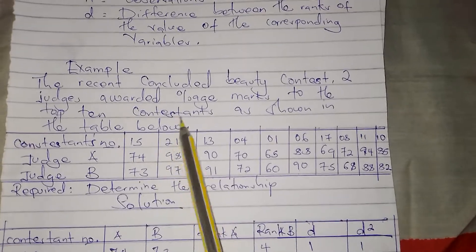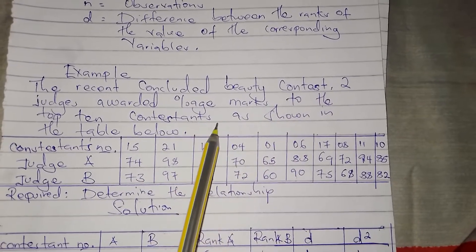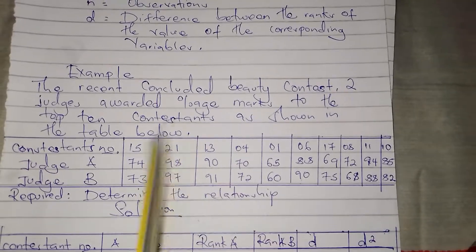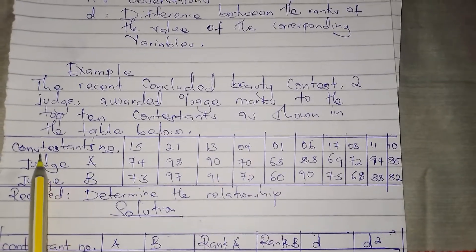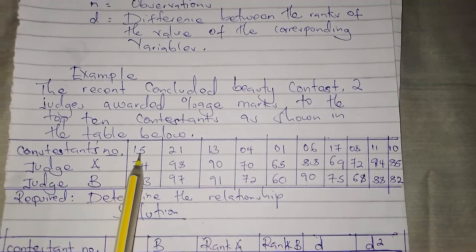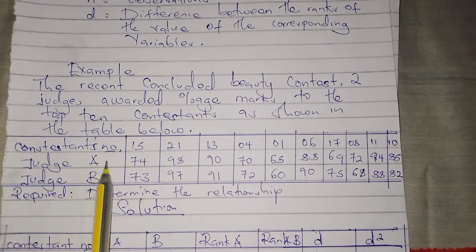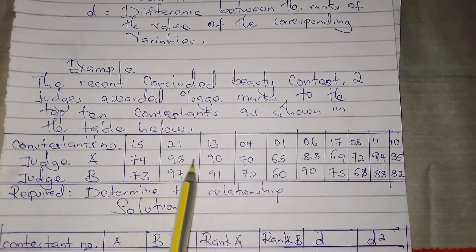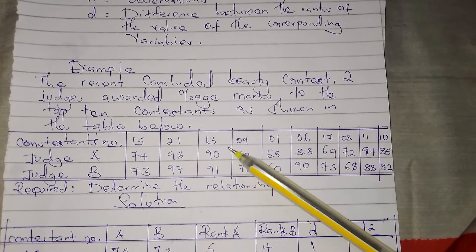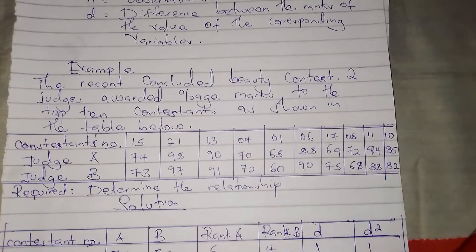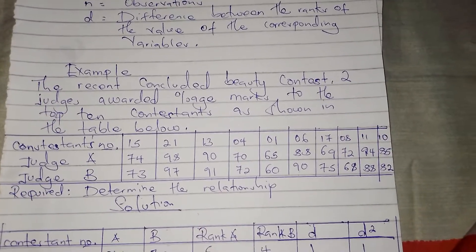Here is our example. In a recently concluded beauty contest, two judges awarded percentage marks to the top 10 contestants as shown in the table. The table shows contestant numbers, then the marks given by Judge A, and marks given by Judge B. We are required to determine the relationship between the marks given by Judge A and Judge B, so we use Spearman's method because this data requires ranking.